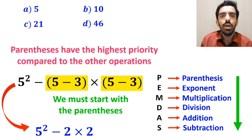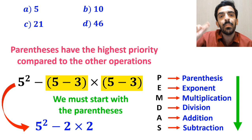Okay, instead of this expression, we can write 5 squared minus 2, then multiply by 2.